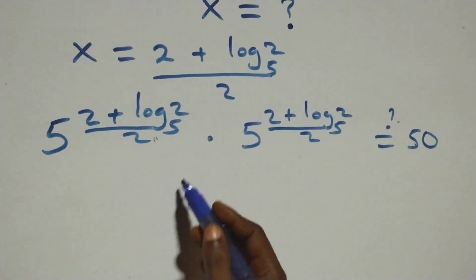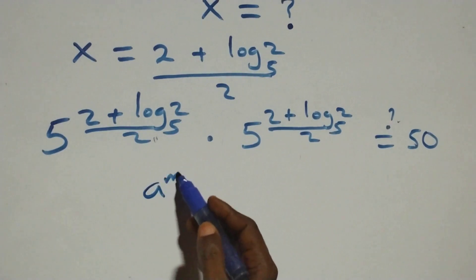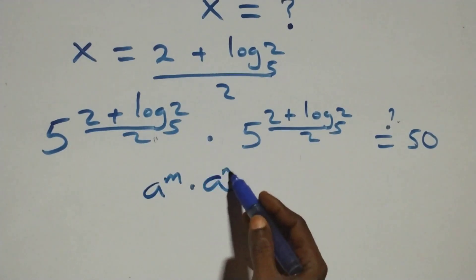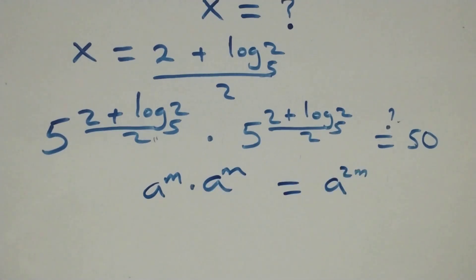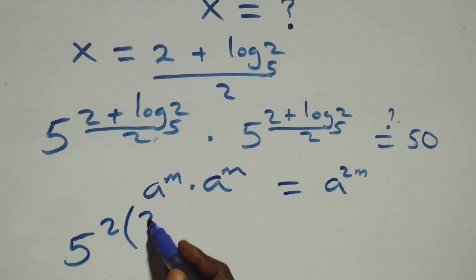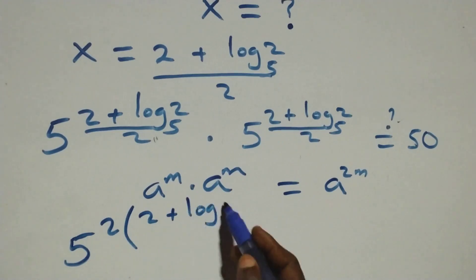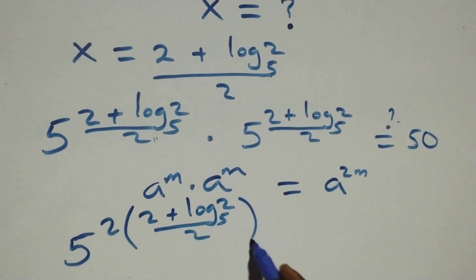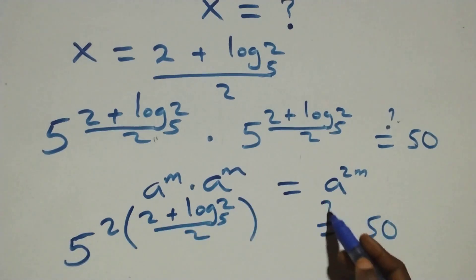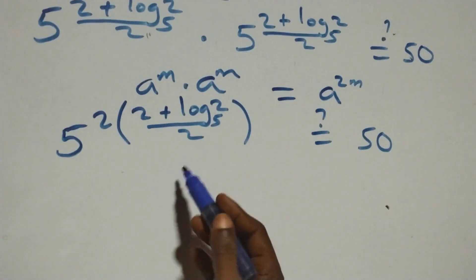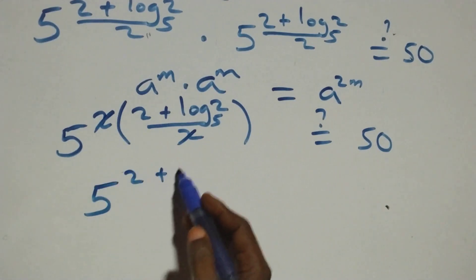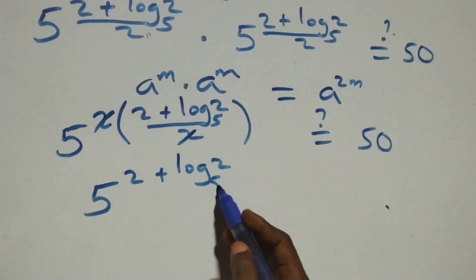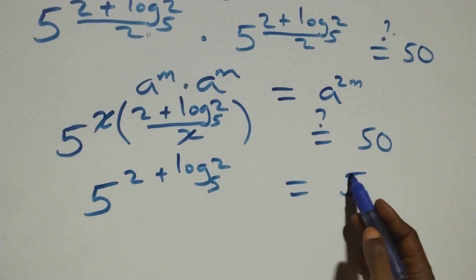Substituting x equals (2 plus log 2 base 5) over 2, we have 5 raised to (2 plus log 2 base 5) over 2, times 5 raised to (2 plus log 2 base 5) over 2, equals 50. The powers multiply, the 2s cancel each other, and we have 5 raised to power 2 plus log 2 base 5, equals 50.